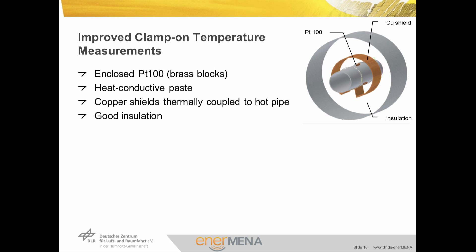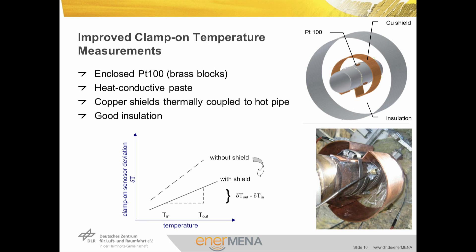Using high-temperature heat-conductive paste at the surface in contact enhances the conduction. Furthermore, additional copper shields thermally coupled to the pipe are used to decrease the temperature gradient across the sensor and brass block. The addition of the copper shields reduces the temperature deviation of clamp-on sensors from built-in ones by half and also reduces the slope of their deviation with temperature.